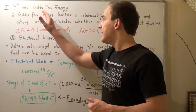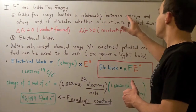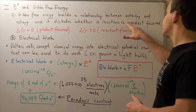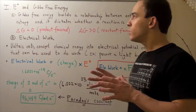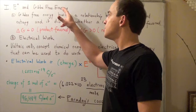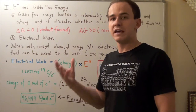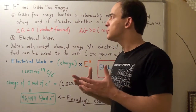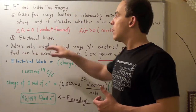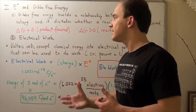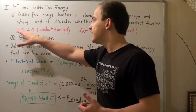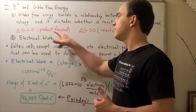Recall that Gibbs free energy builds a relationship between enthalpy and entropy, and it also dictates whether a reaction is product-favored or reactant-favored. Notice that both cell voltage and Gibbs free energy dictate whether or not a reaction is product-favored. Therefore, we can imagine there is some relationship between cell voltage and Gibbs free energy. When Gibbs free energy is positive, the reaction is reactant-favored and not spontaneous; when it's negative, the reaction is product-favored and spontaneous.